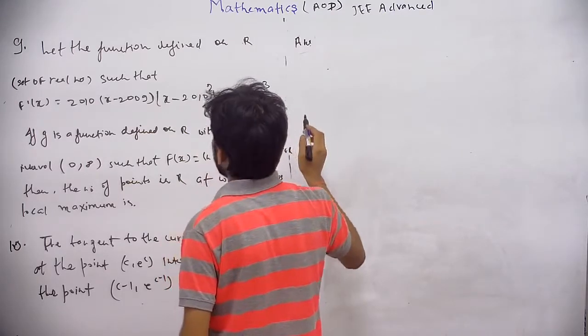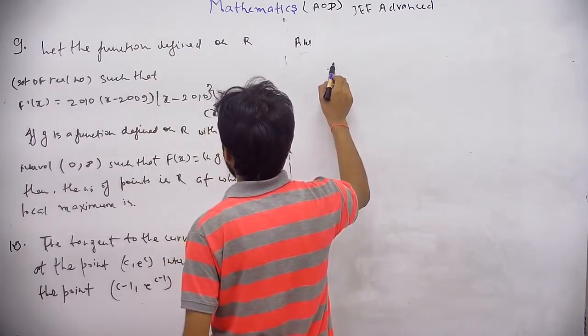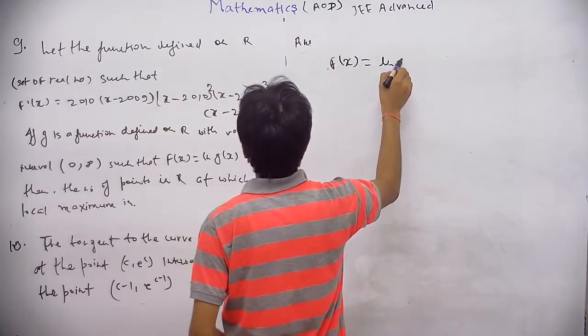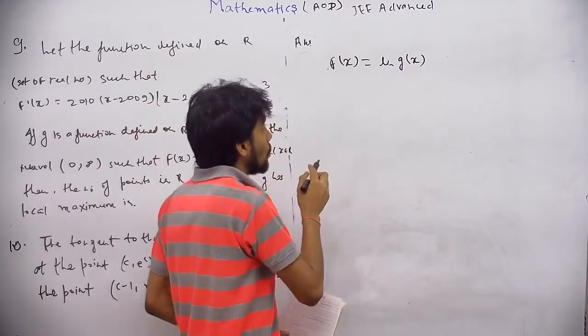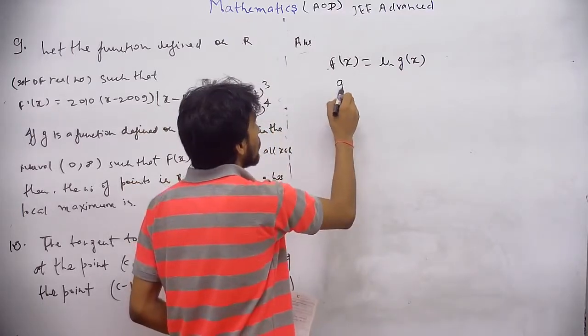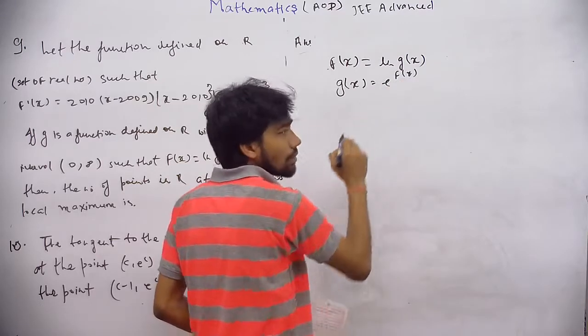So given that f(x) equal to ln(g(x)). So what will be g(x)? e raised to f(x), okay.